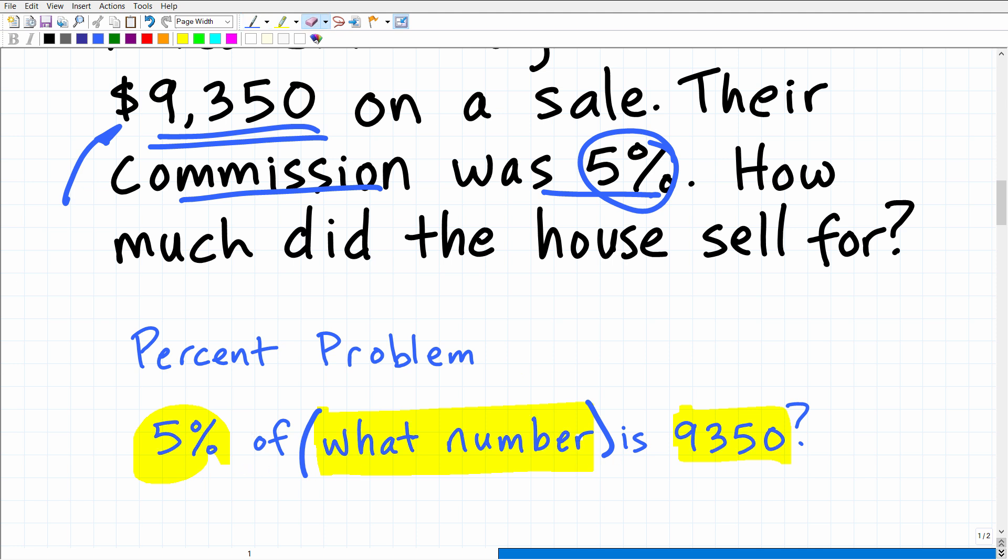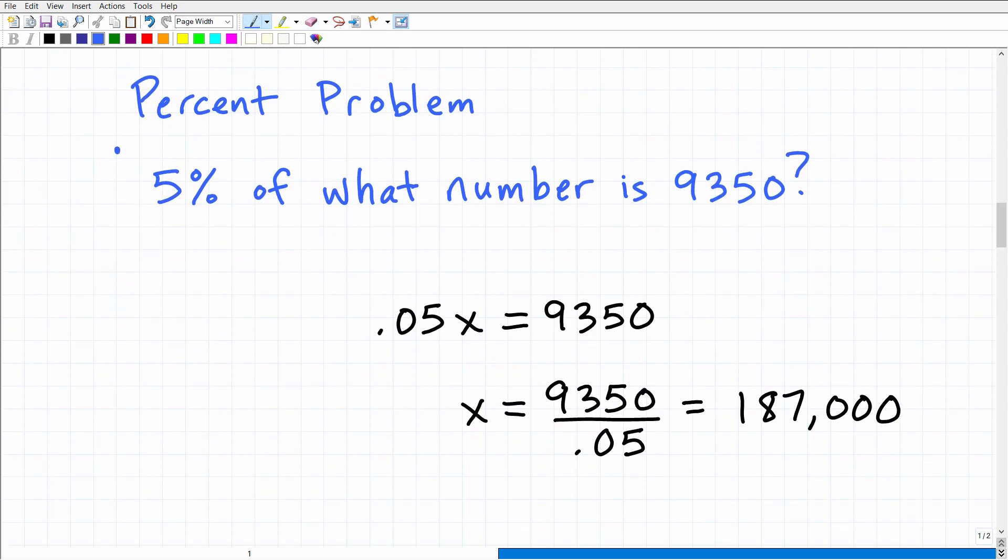5% of what number is 9350? So, a good way to do word problems, especially percent type of word problems, is to translate it into a simpler problem. We don't need to know about real estate agents' commissions. We just really need to understand the math aspect of this problem. So, 5% of what number is 9350? If you understand this, that's excellent. And, what we're going to do now is translate this problem into a basic algebraic equation.